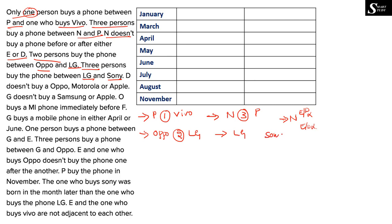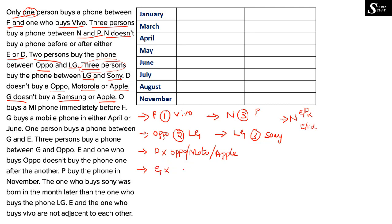Between LG and Sony there must be a gap of 3 persons. Next clue: D doesn't buy Oppo, Motorola or Apple — D is not going to buy any of those three brands. Also, G doesn't buy Samsung or Apple — G is not going to buy a Samsung phone or an Apple phone. We keep all these restrictions noted for later substitution.